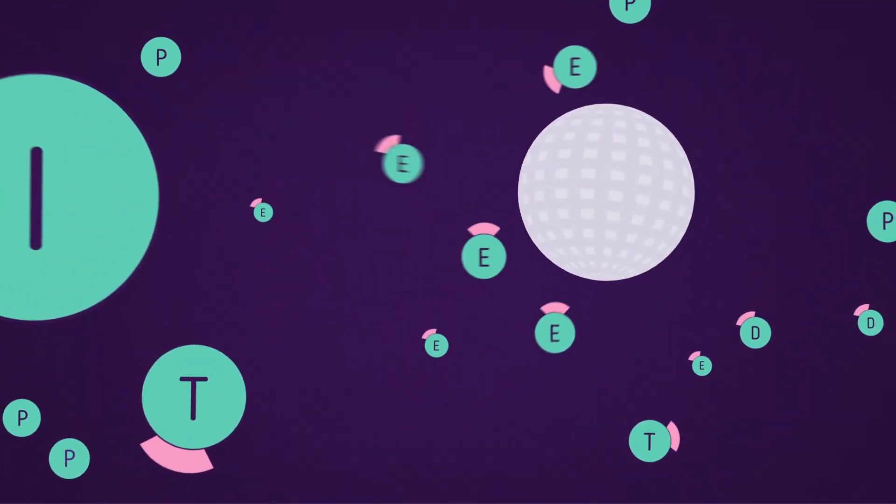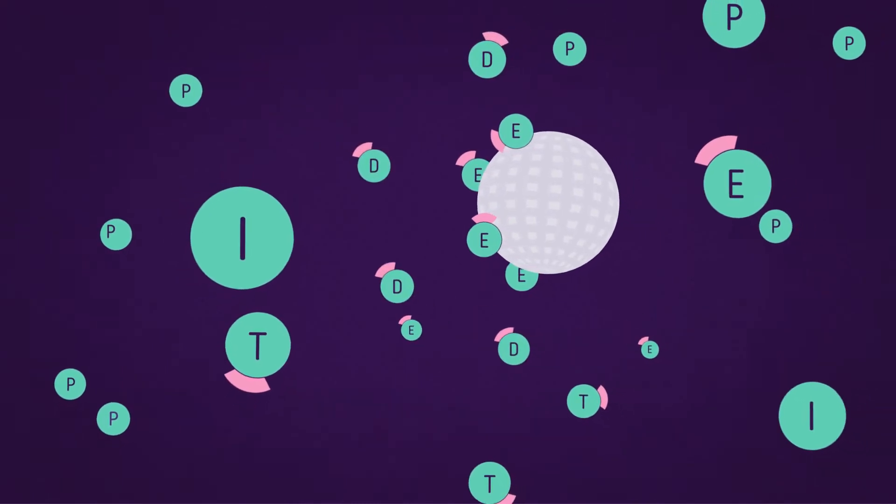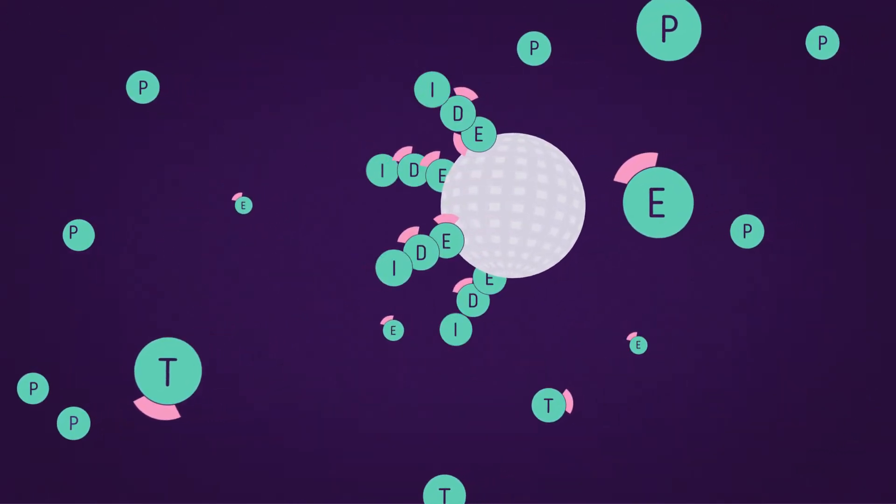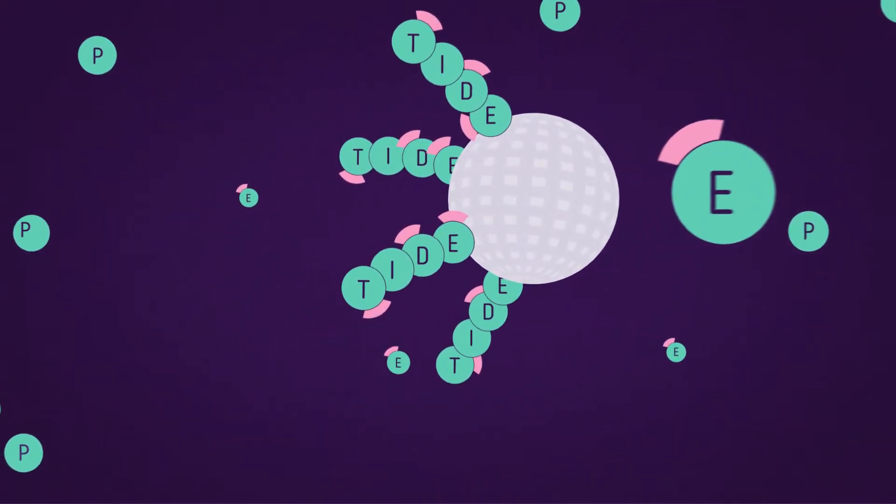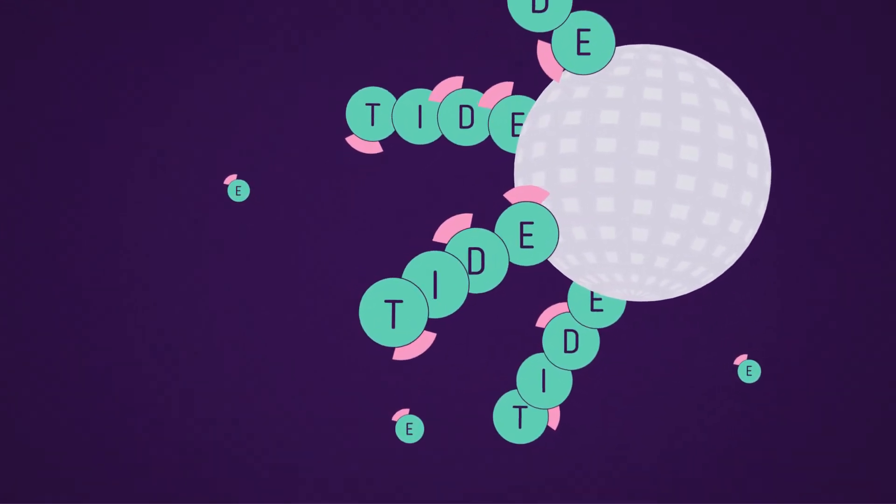Start by assembling the peptide of your choice using solid phase peptide synthesis. Just follow your regular cycles of deprotection and amino acid coupling to build your product.